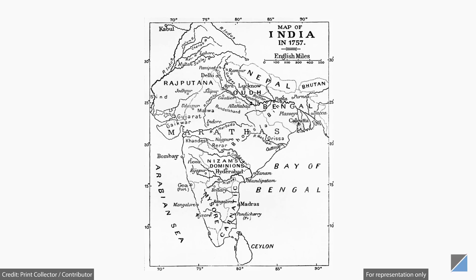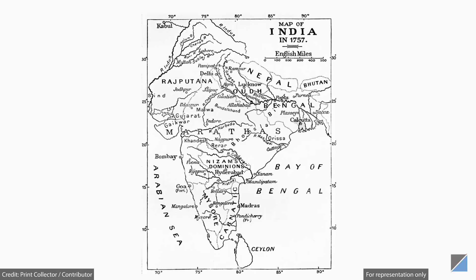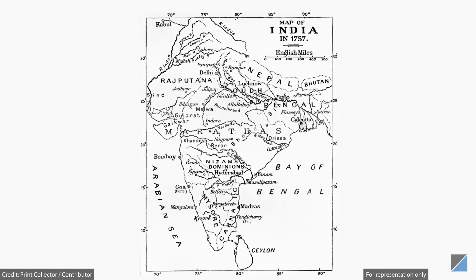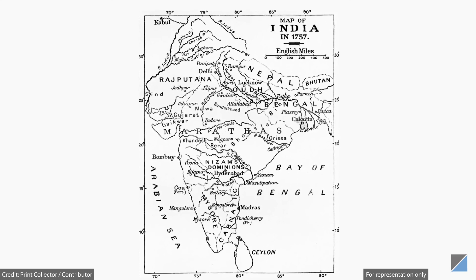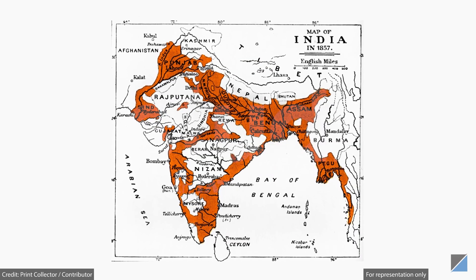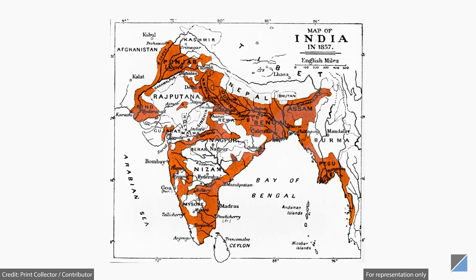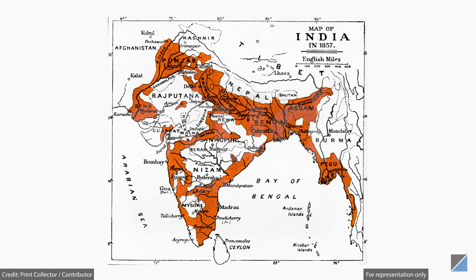The company continued to expand its territories in the Indian subcontinent for the next hundred years. By 1857, they had conquered 63% of India's territory.